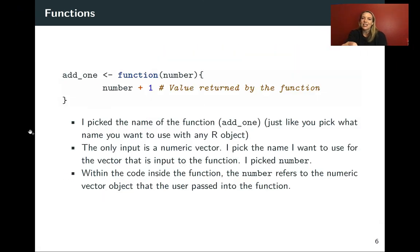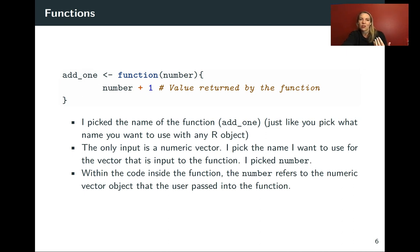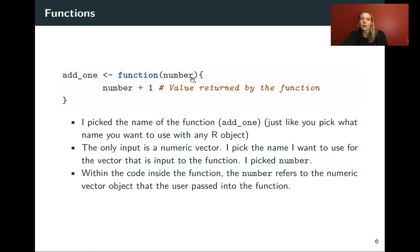A few things to note: I picked a name for the function, `add_one`, following the same rules as for any R object — not picking something that already exists as a function name, using all lowercase, using underscores to separate words. The only input is a number, and that parameter name is `number`. Right now I haven't put a default, but we'll look later at how we could add a default value.